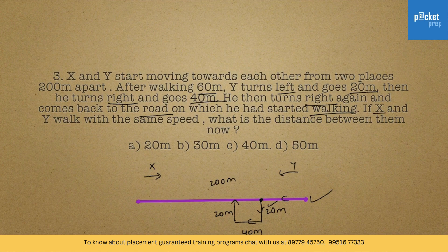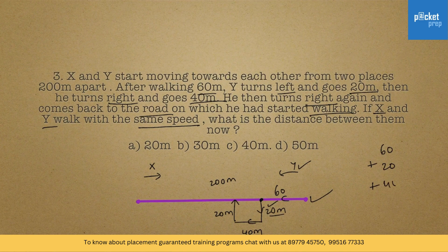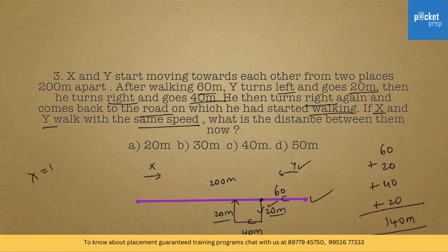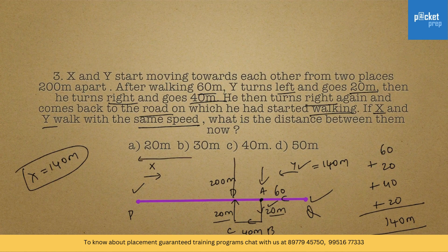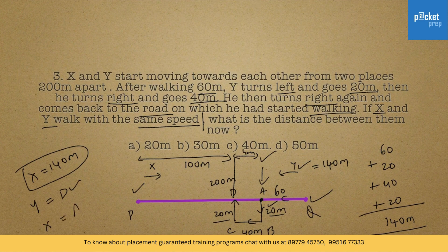X and Y walk with the same speed. How much distance did Y cover? It is 60 plus 20 plus 40 plus 20, totaling 140 meters. If X travels 140 meters from point P (his starting point), he would reach up to point A — because from the starting point to the middle of the road is 100 meters, and adding 40 more after that, X reaches point A. So at this stage, Y is at point D and X is at point A.